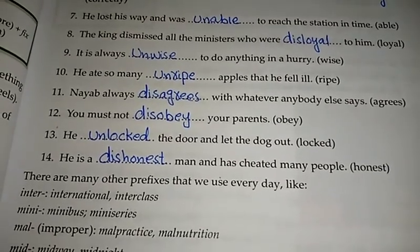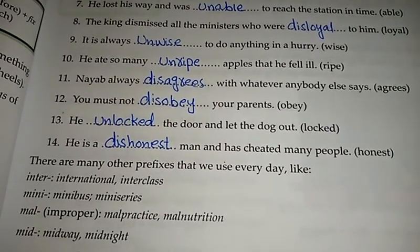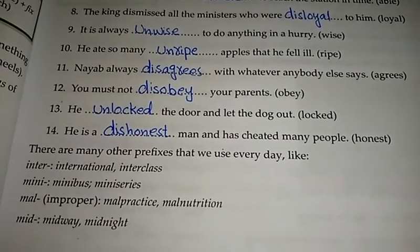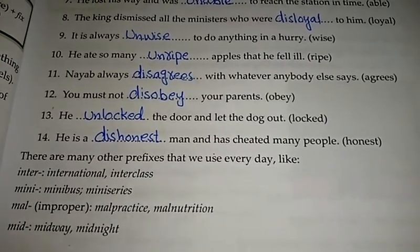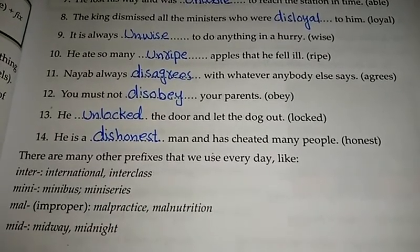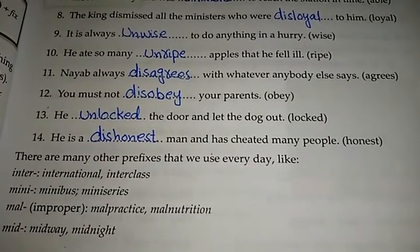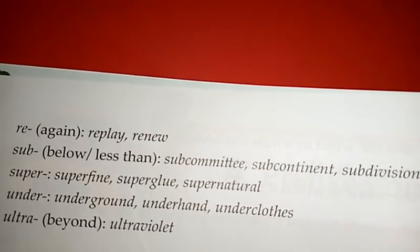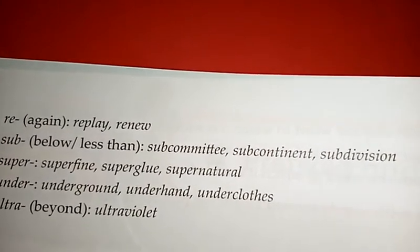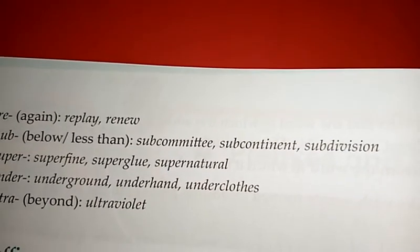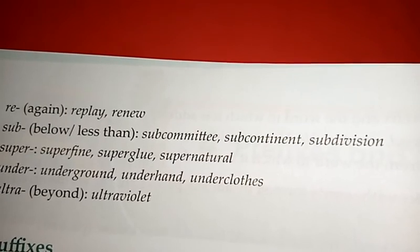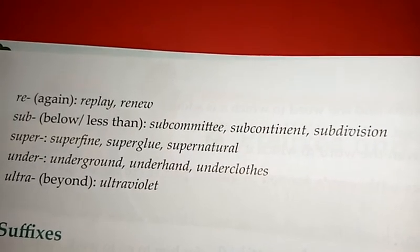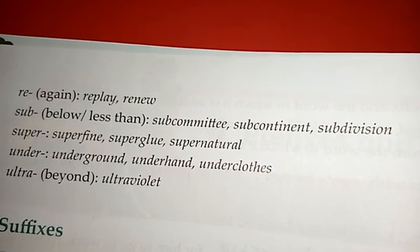There are many other prefixes we use every day. 'Inter' means between — interclass, international. 'Mini' means small — minibus, miniseries. 'Mal' means improper — malpractice, malnutrition. 'Mid' means middle — midway, midnight. 'Re' means again — reply, renew. 'Sub' means below or less than — subcommittee, subcontinent, subdivision. 'Super' means above — superfine, superglue, supernatural. 'Under' — underground, underhand. 'Ultra' means beyond — ultraviolet.